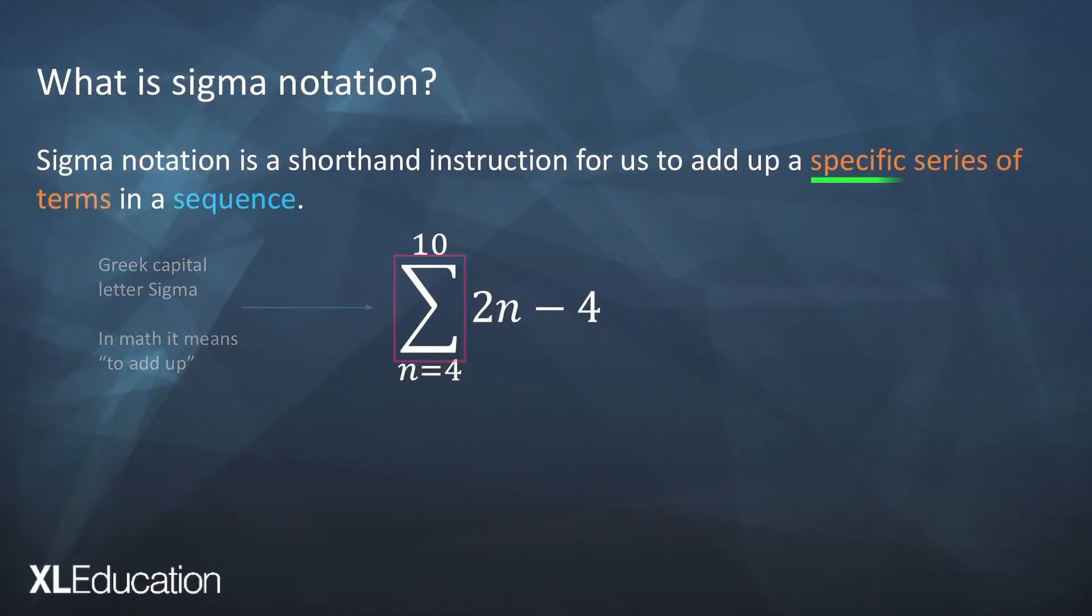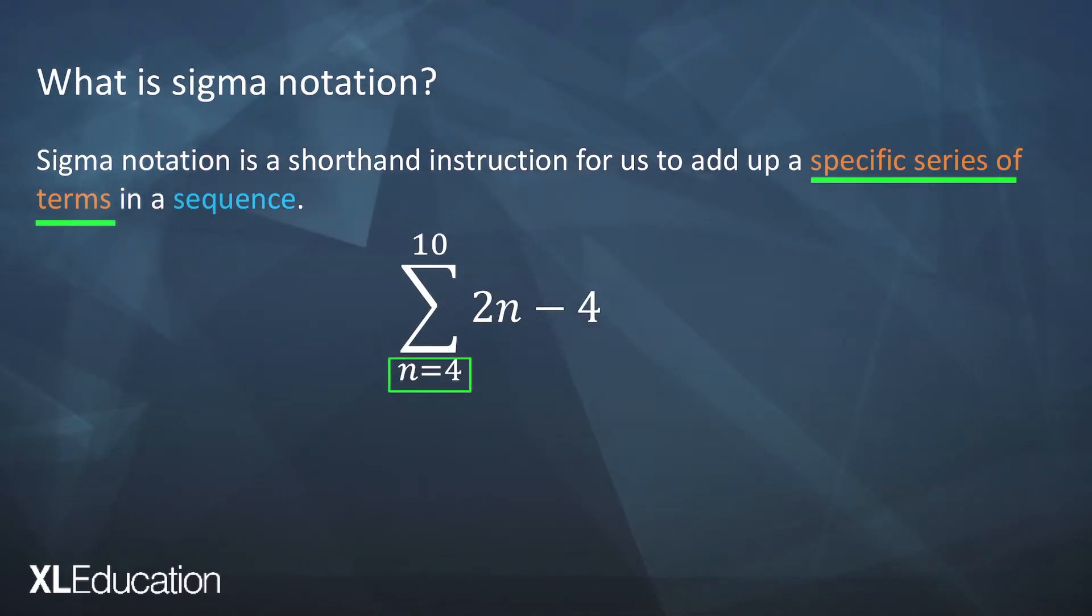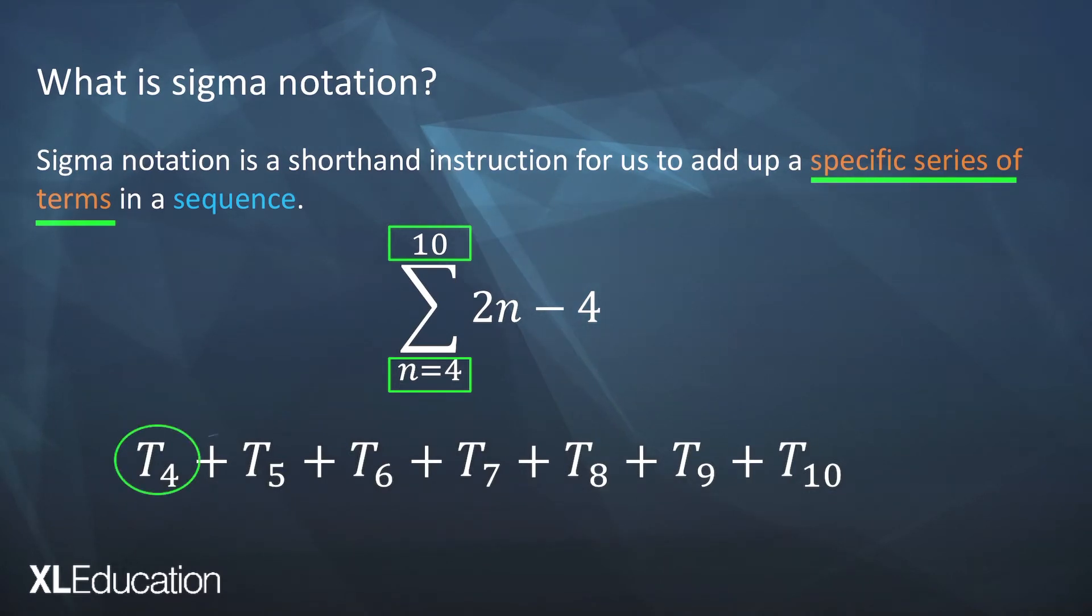So we have a specific series of terms. Where does that come from? It means we're going to start at the term generated when you substitute in 4 and you're going to end at the term generated when you substitute in 10. So you're going to add up t4 plus t5 plus t6 all the way up until t10.